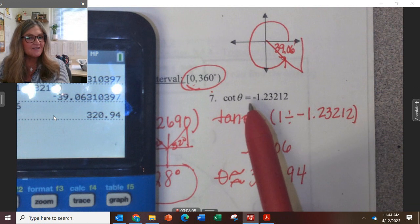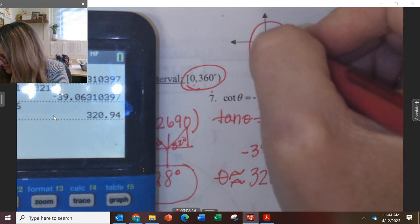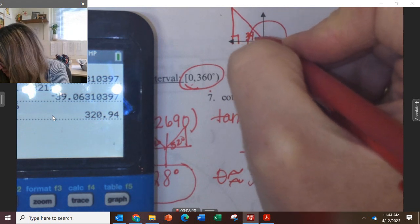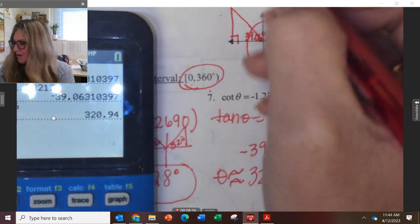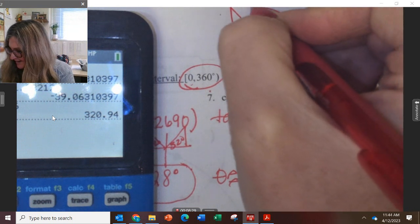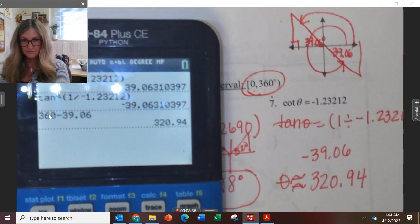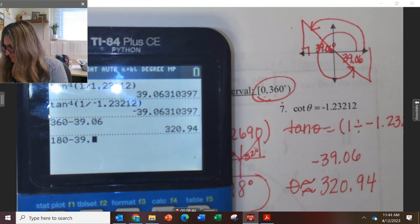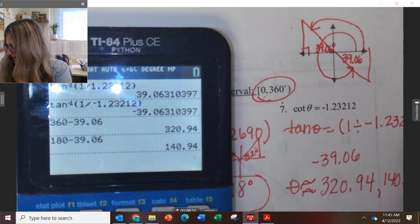Which other quadrant is going to have tangent negative besides quadrant 4? Quadrant 2. So I'm going to go to quadrant 2, and I'm going to have that same reference angle of 39.06. That reference angle doesn't change. So now we have to find the angle that starts here and ends there. And the other angle you get should be 140.94 degrees.